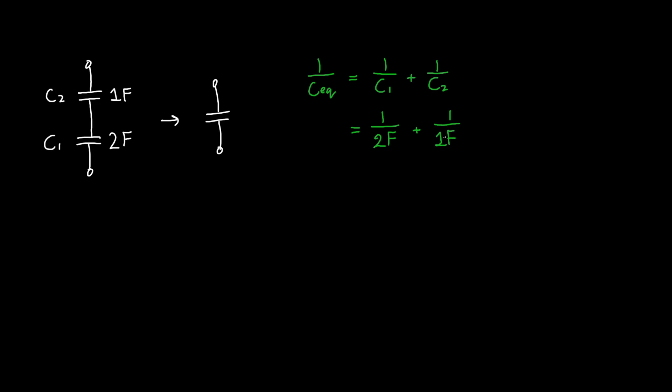So one over two farads plus one over one farad. So we can do this on a computer, or because this is relatively simple, we can do it in our heads. So if we multiply this by two over two, then we'll end up with three over two farads. This is one over the equivalent capacitance, which means that the equivalent capacitance is two-thirds of a farad.